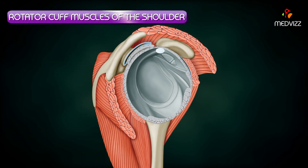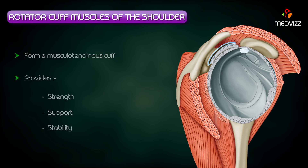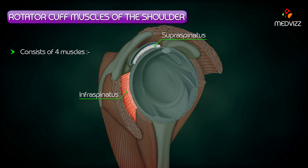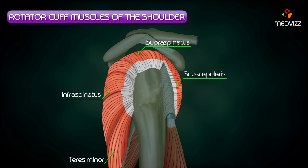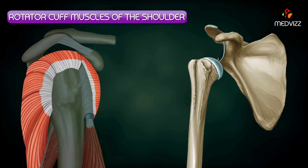The rotator cuff muscles are a group of muscles that form a musculotendinous cuff, which provides strength, support and stability to the capsule of the shoulder joint. It consists of four muscles: supraspinatus, infraspinatus, teres minor, and subscapularis. The four rotator cuff muscles support the anterior, superior and posterior aspects of the joint, leaving the inferior part of the joint the weakest. Hence, an inferior dislocation of the shoulder joint is most common.